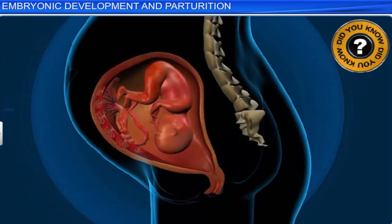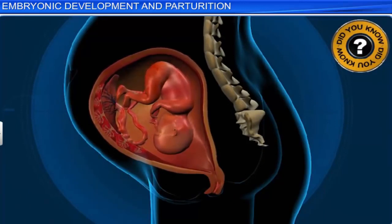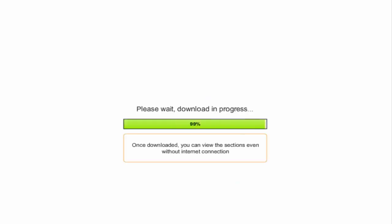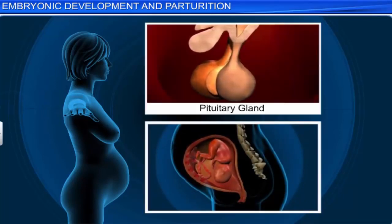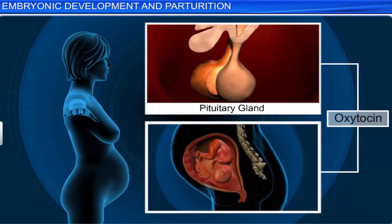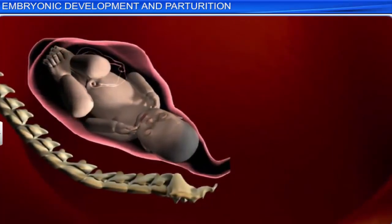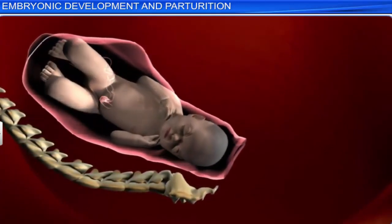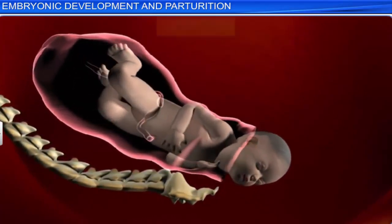At the end of the gestation period, the fetus as well as the placenta starts secreting hormones that set in motion mild uterine contractions called the fetal ejection reflex. These contractions in turn act on the mother's pituitary gland, which now starts secreting oxytocin — a hormone that causes stronger uterine contractions. The simultaneous uterine contractions and oxytocin release make the contractions stronger with every passing minute, ultimately resulting in the expulsion of the baby from the mother's uterus. This process of delivery of the fetus is called parturition.